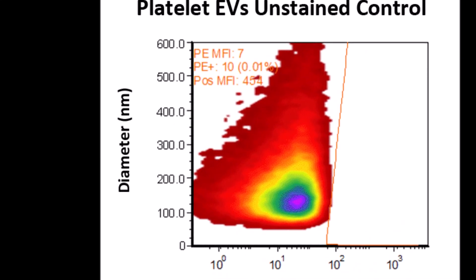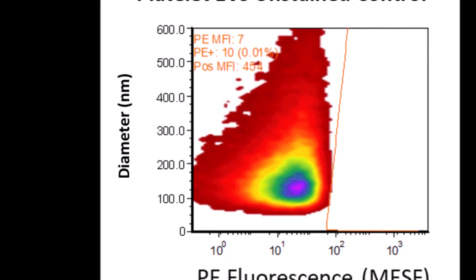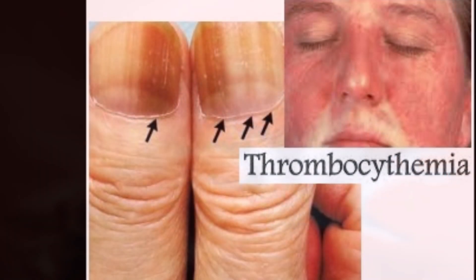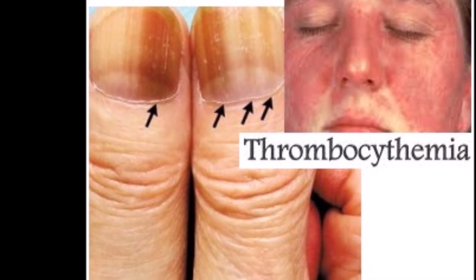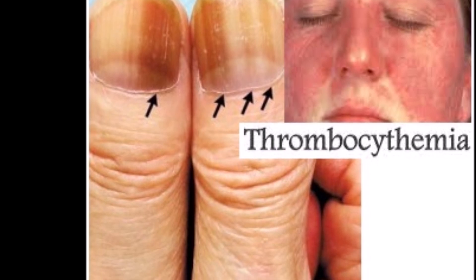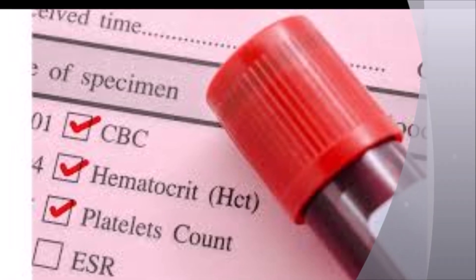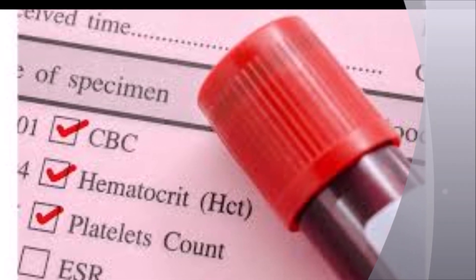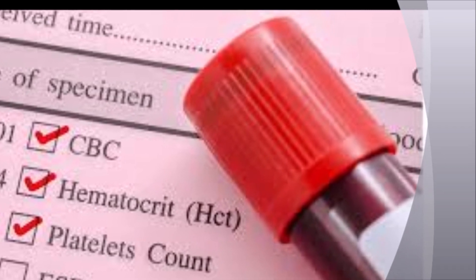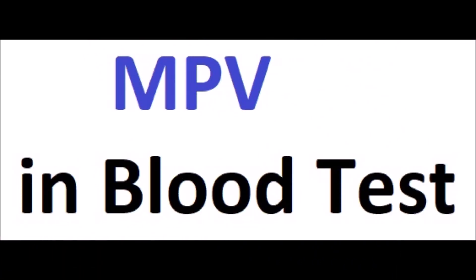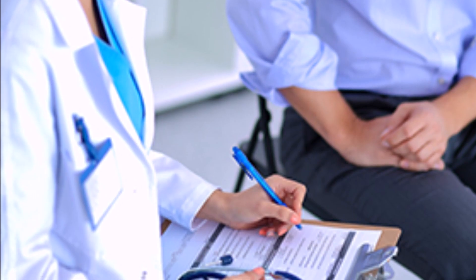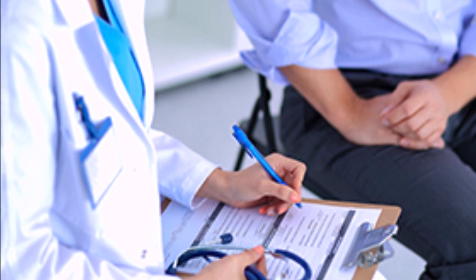Among all indices, the PDW has been receiving attention due to its usefulness for distinguishing between reactive thrombocytosis and thrombocytosis associated with myeloproliferative disorder. Determination of the PDW reference range is fundamental, and the association of this parameter with the platelet number and mean platelet volume may be used for the diagnosis and differentiation of several pathologies.